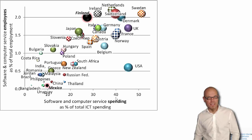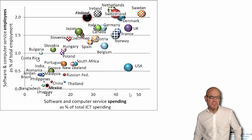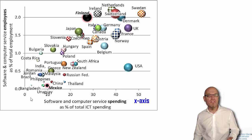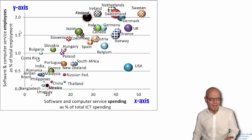So we have two axes in this graph. We have a horizontal axis, which is usually referred to as the x-axis, and we have a vertical axis, which is usually referred to as the y-axis.